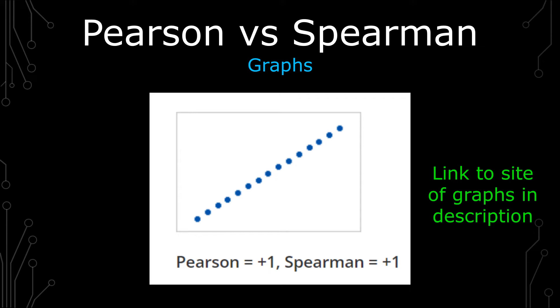Because like I said, with the monotonic relationship, as one increases, the other one doesn't decrease. Nowhere does it decrease there. Whereas with the Pearson, for every interval, there's an increase at about the same rate.